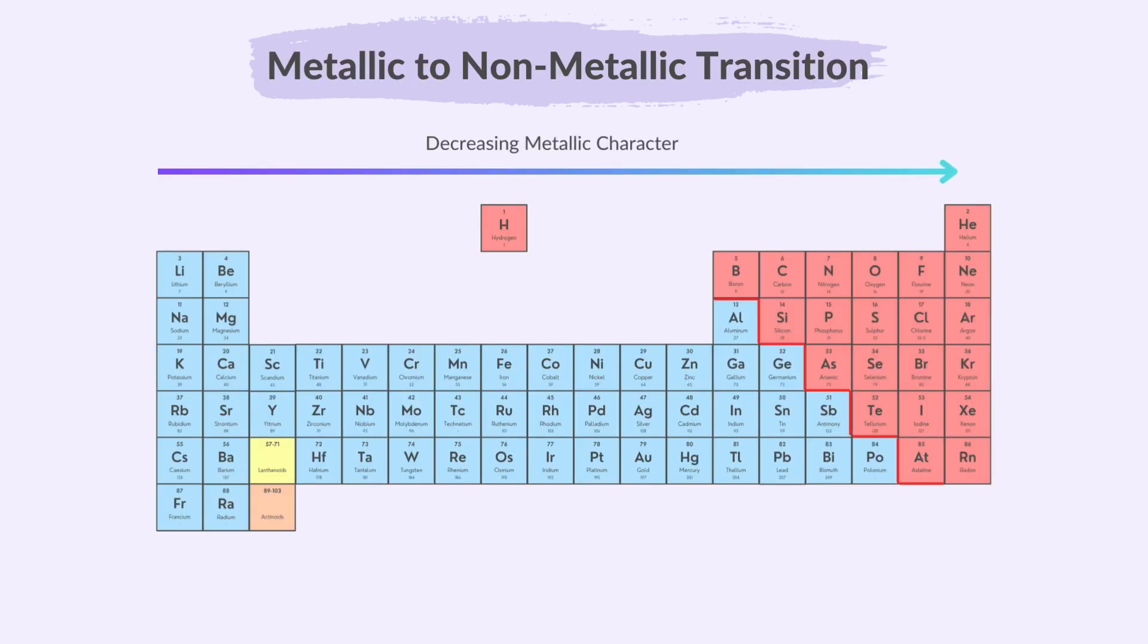As you move from left to right across a period in the periodic table, the character of the elements change from metallic to non-metallic. You may have noticed the red stepped line on this periodic table. This line separates metals from non-metals, with the non-metals to the right, except for hydrogen.